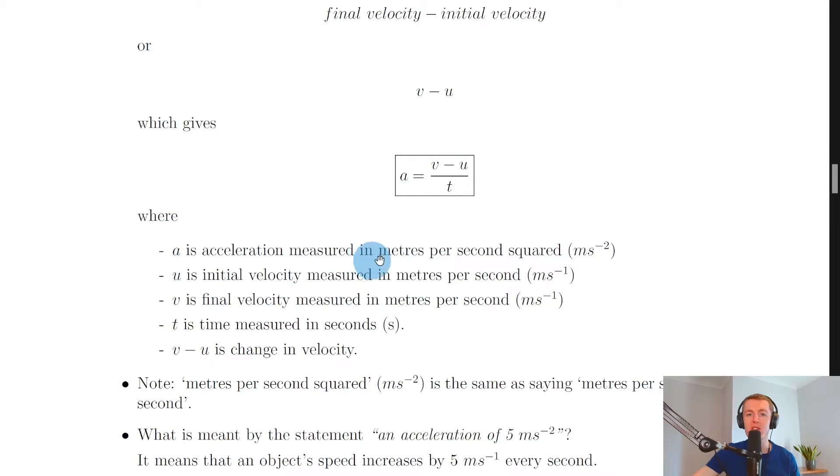Where a is acceleration measured in meters per second squared, that's ms to the minus 2, u is initial velocity measured in meters per second, v is final velocity measured in meters per second, t is time measured in seconds, and v minus u is the change in velocity.